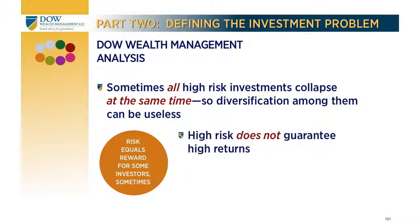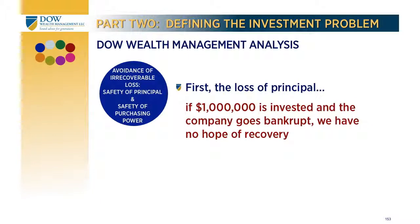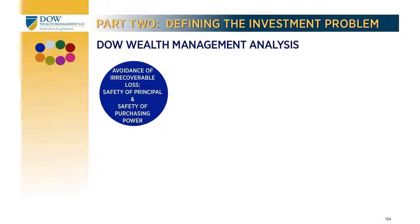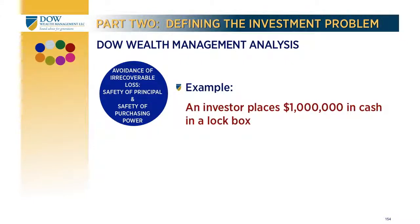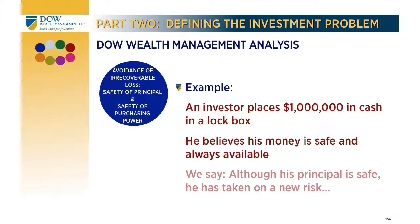When thinking about wealth preservation, we need to be aware of two ways we can suffer irrecoverable losses. The first is the loss of our principal — if we invest a million dollars in a fund and it goes bankrupt, there is no hope of recovery. The second is the loss of our principal's purchasing power due to inflation. Suppose an investor places a million dollars in a safe deposit box — he might believe he can sleep well at night, assured his money is secure and available. However, although his principal is safe, he has merely taken on a new kind of risk, and he probably shouldn't sleep well at all.